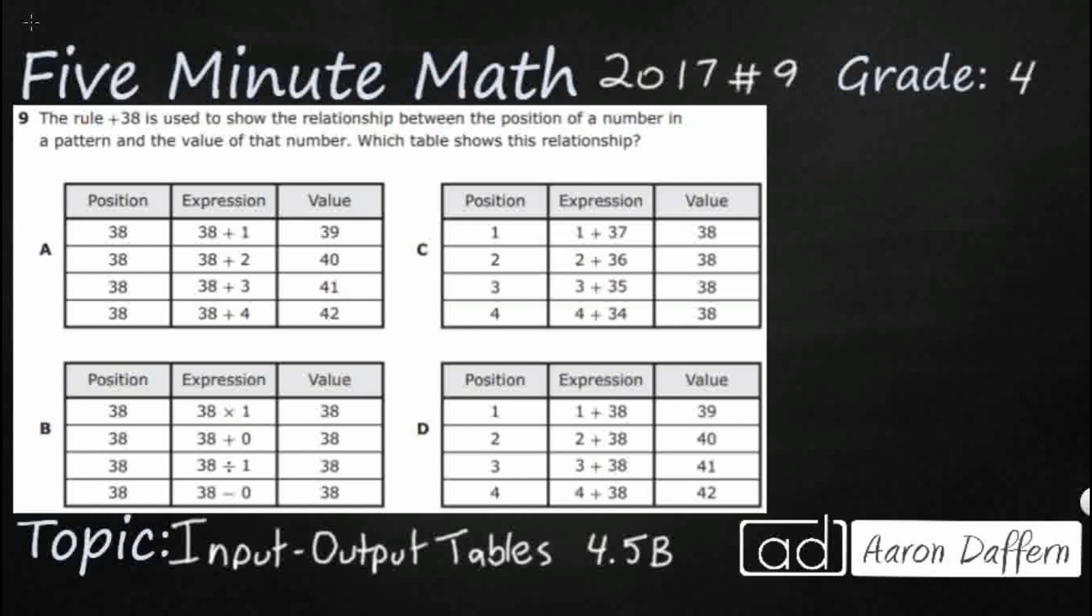They are going to give us the rule here right away. Plus 38 is used to show the relationship between the position of a number in a pattern and the value of that number. So, which table shows this relationship. We can make our own little input-output table using all the information they gave us.